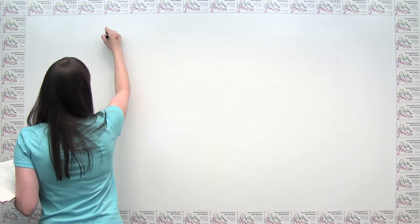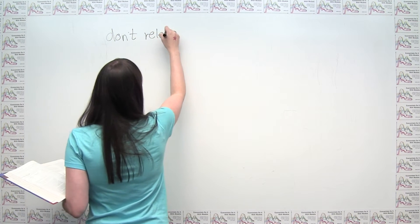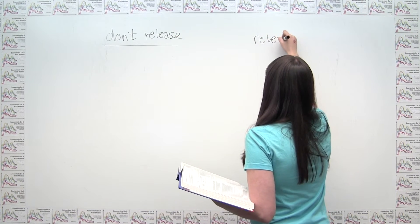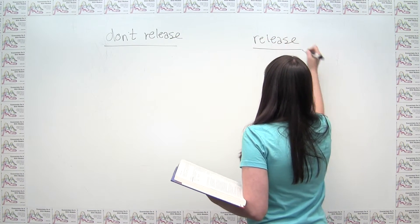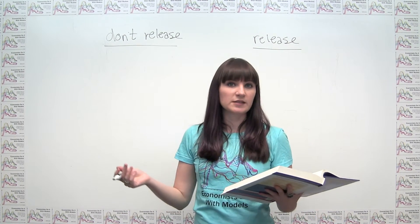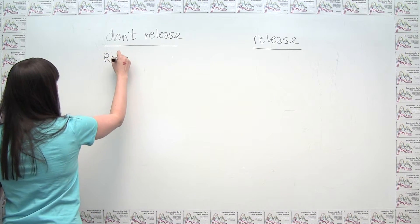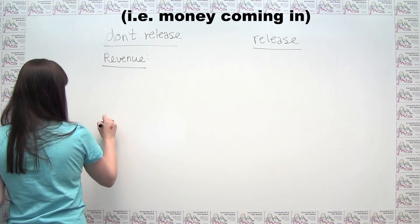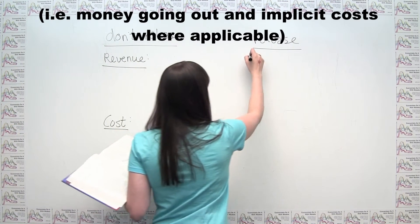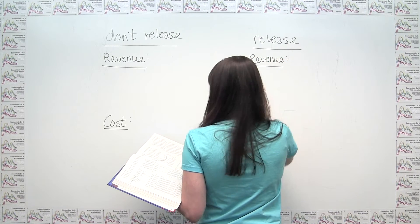I'll put on the left our column being "don't release" and our column on the right being "release." We just want to think about our revenues and our costs under each of these scenarios, so I'll put revenue and cost for each side.